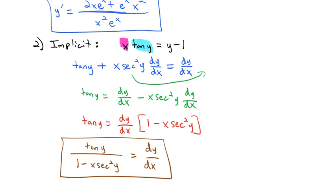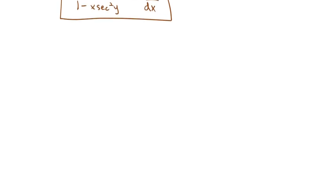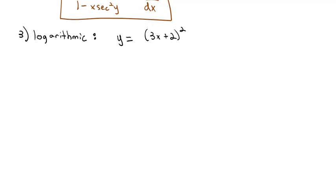There was one other type of differentiation we talked about — logarithmic differentiation. Logarithmic differentiation is where we first take the natural log of both sides to get something that's easier to differentiate. We use logarithmic differentiation if the variable is in the exponent, or if there's a lot of multiplying and dividing going on. For example, if we have y equals (3x + 2)² times (x − 4)⁵ over the square root of (x + 1) times (x − 5)³.